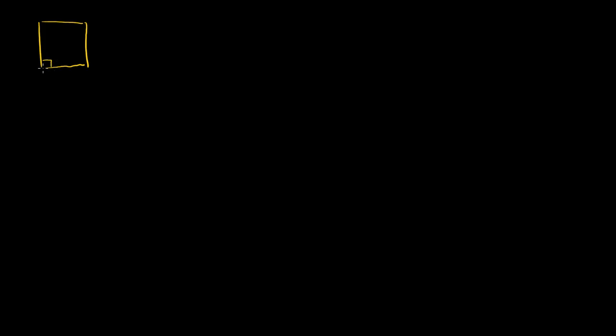I've got a square here. What makes it a square is all of the sides are equal. I haven't gone in depth into angles yet, but these are at right angles to each other. That means that if this bottom side goes straight left and right, this left side will go straight up and down. That's all the right angle really means. Let's say that the side down here is equal to 8 meters. And if I were to ask you, what is the area of the square?